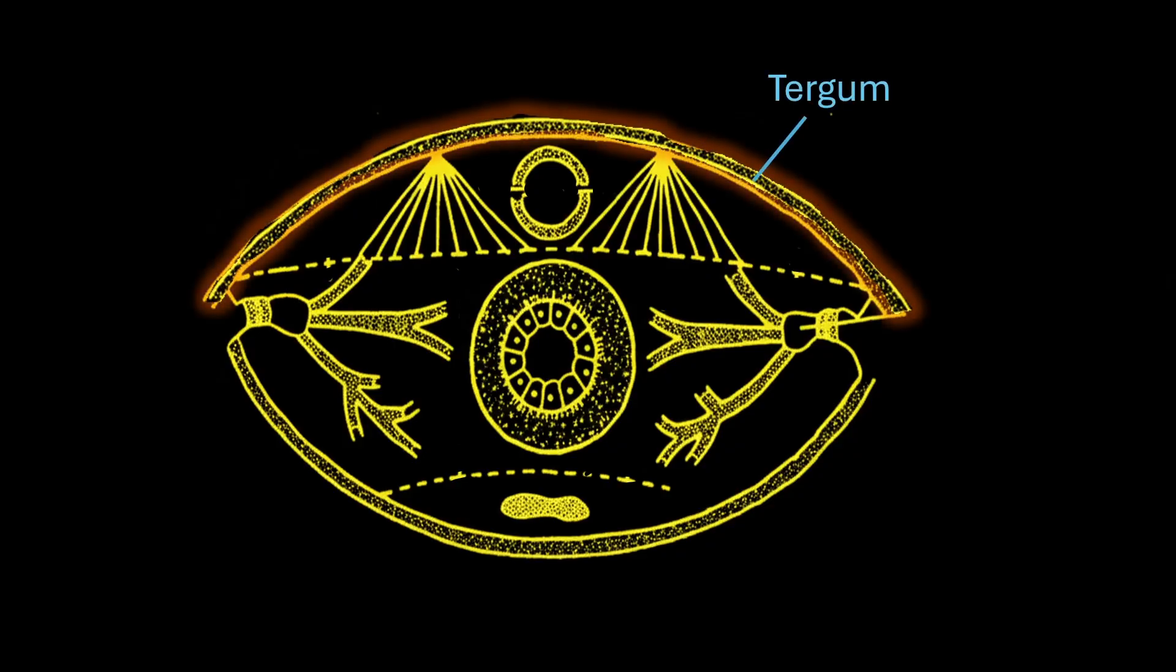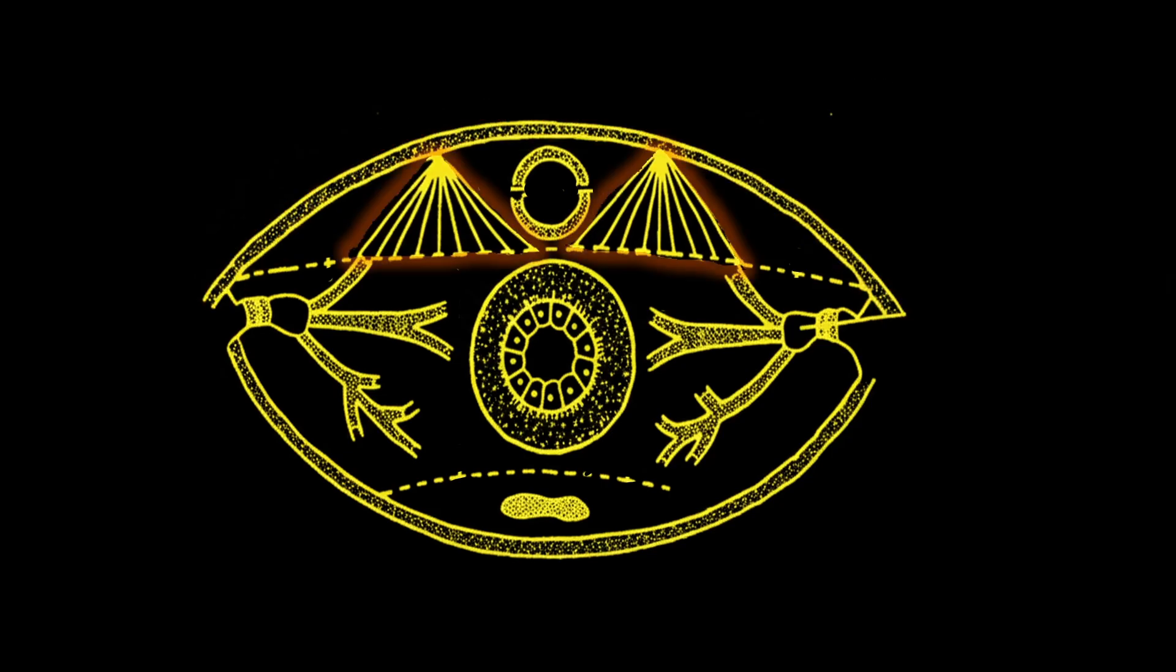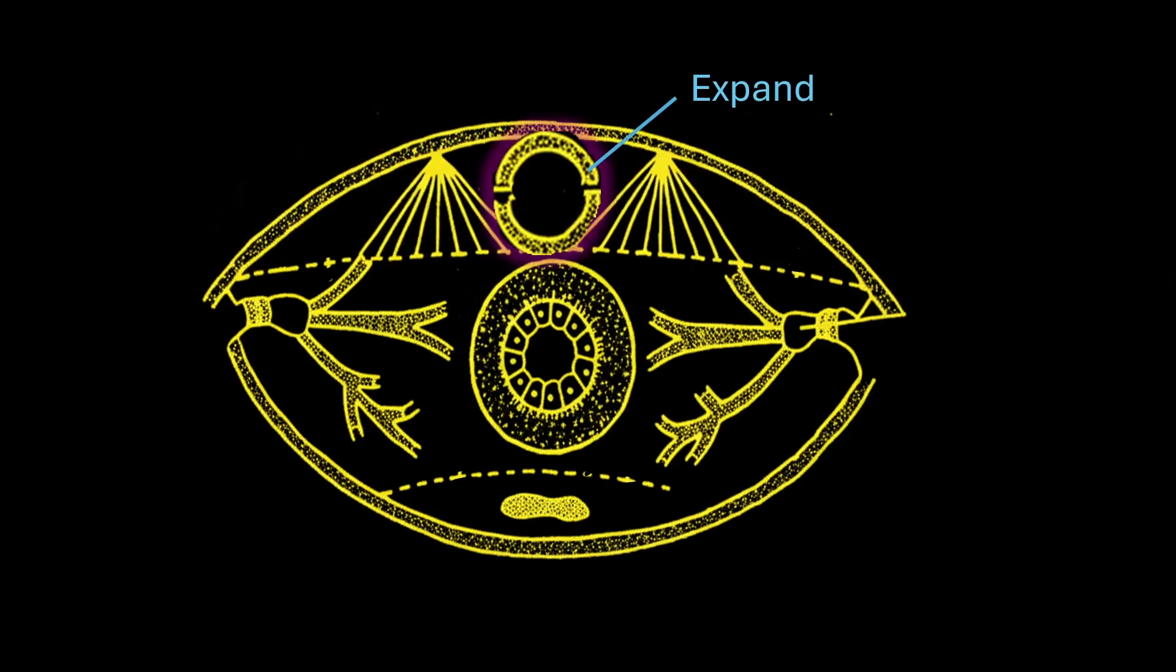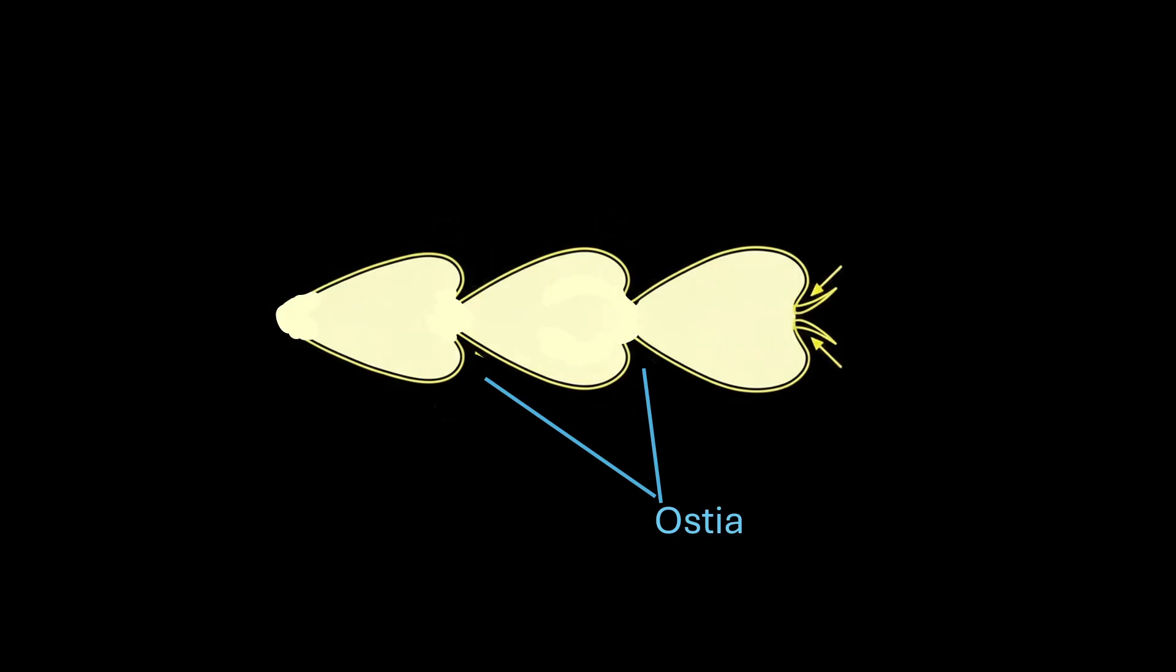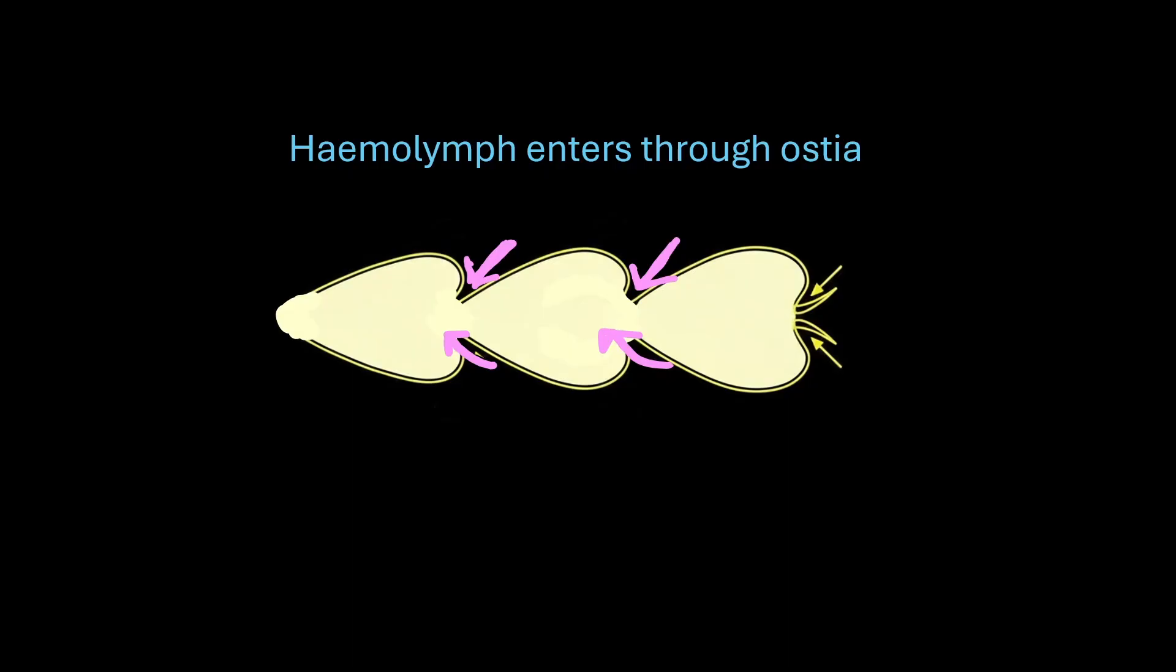When these muscles contract, they gently expand and compress the heart. Now, as you can see, these are the ostia, which are the fine openings present in the heart. Now with each contraction, the hemolymph enters through the ostia and moves forward towards the head from the back.